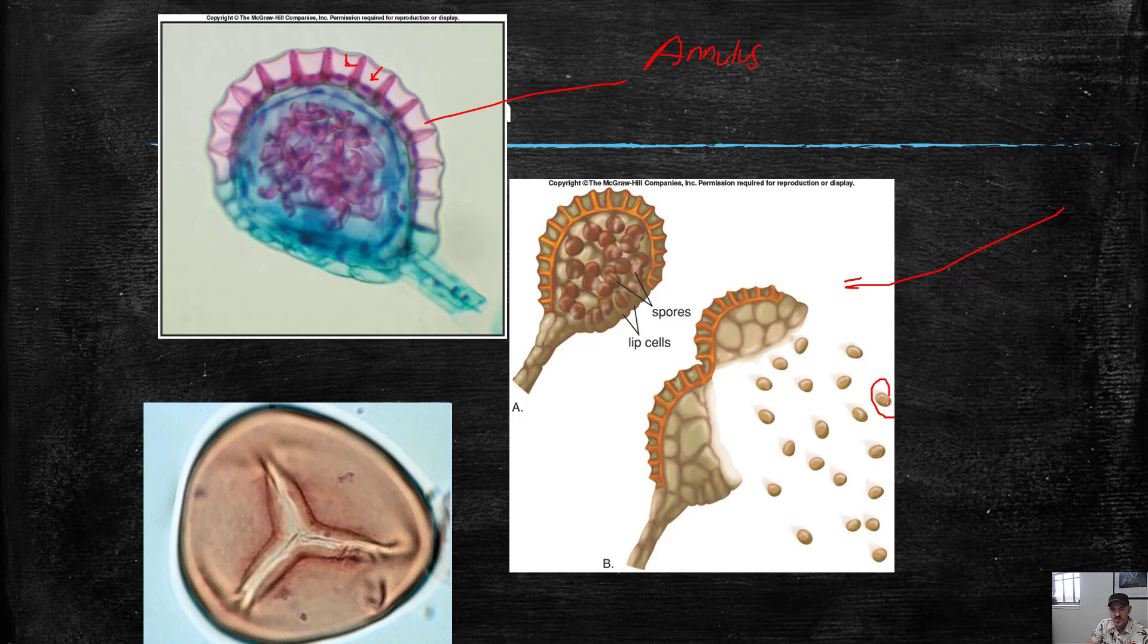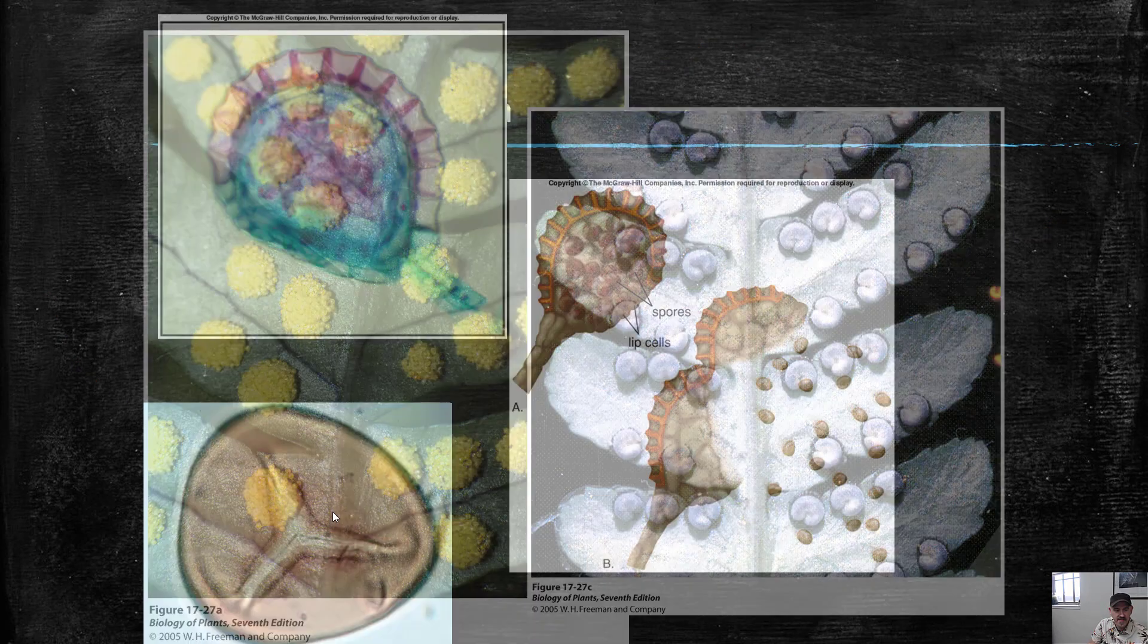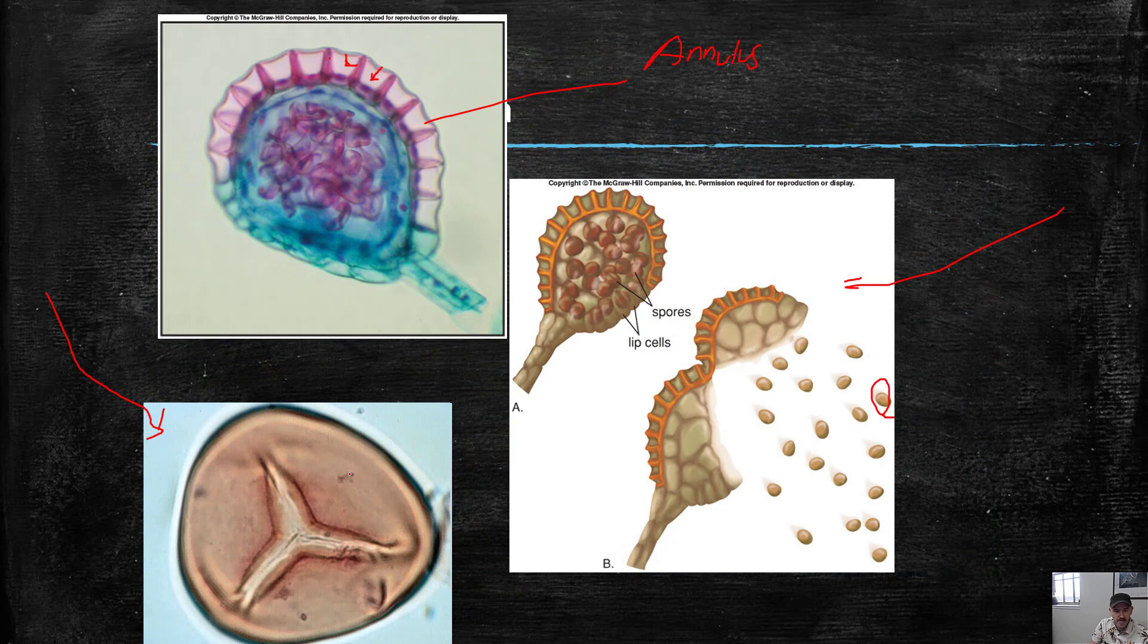These spores, once again, are covered with sporopollenin. It's a protective coating. And that protective coating is really resilient. In fact, this spore here, here's a spore you can see. That's a spore from the Cretaceous period, the time of the dinosaurs. It's not alive anymore, but you can still see that sporopollenin layer. This is from a fossil I described in grad school.